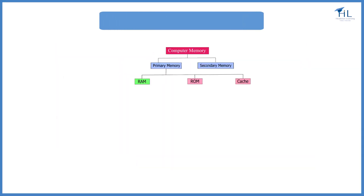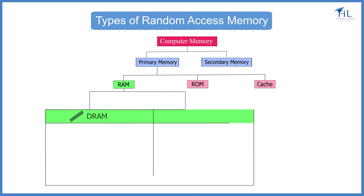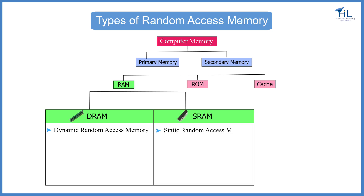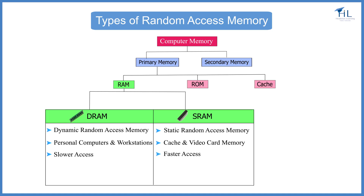RAM is of two types: DRAM, or Dynamic Random Access Memory, and SRAM, or Static Random Access Memory. DRAM is used in personal computers and workstations. SRAM is used in cache and video card memory. DRAM is slower than SRAM. DRAM is less expensive than SRAM. DRAM has more storage capacity than SRAM.